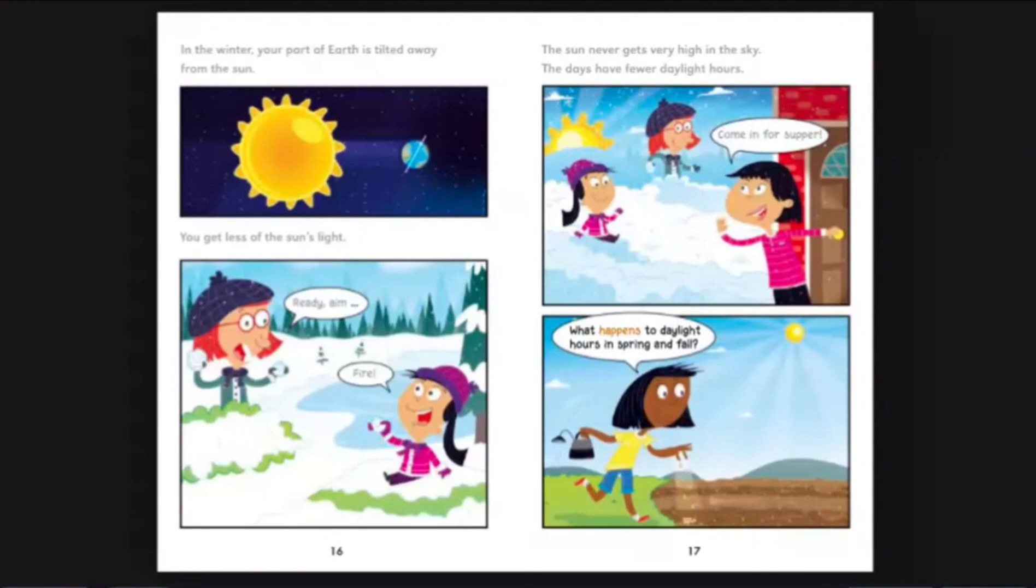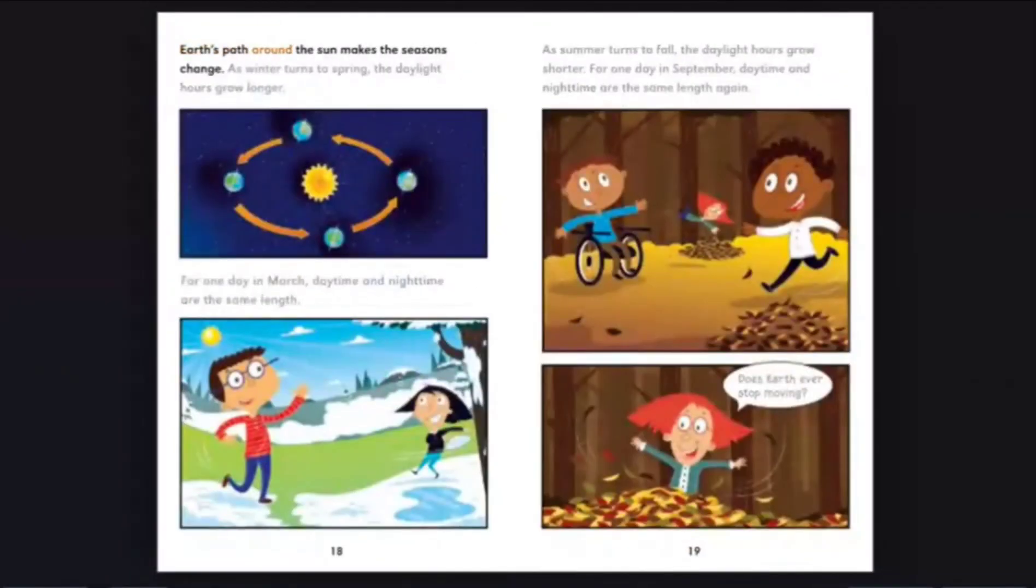What happens to daylight hours in spring and fall? Earth's path around the sun makes the seasons change. As winter turns to spring, the daylight hours grow longer. For one day in March, daytime and nighttime are the same length.